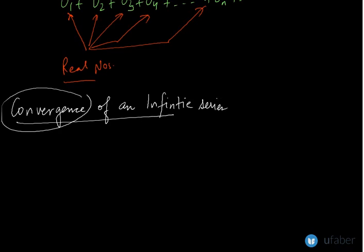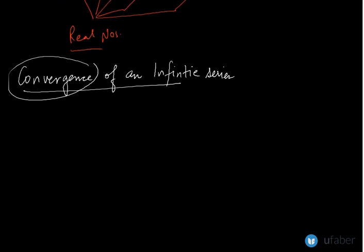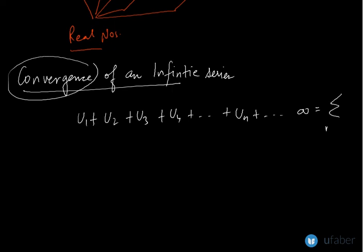For example, let us take a series of infinite terms as above. Let us take u1 plus u2 plus u3 plus u4 plus un, and it proceeds on to infinity. If I have to generalize this, I can write it down as the sum from n equals 1 to infinity of un. So this is an infinite series.